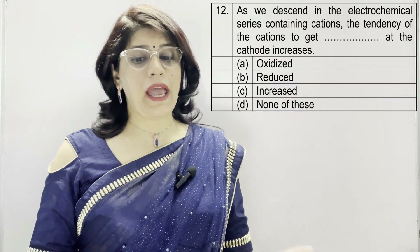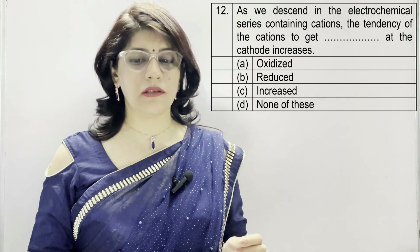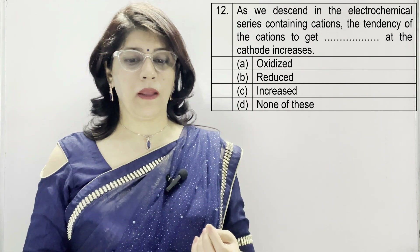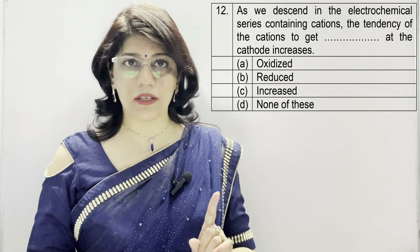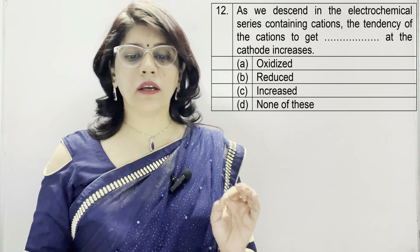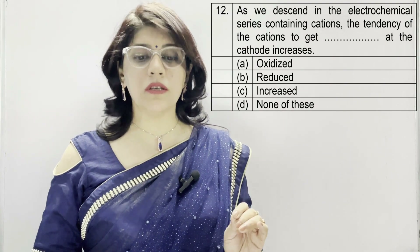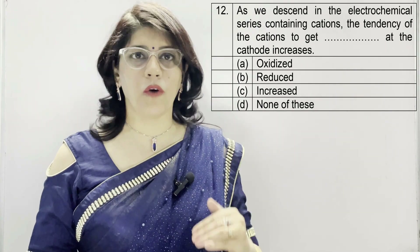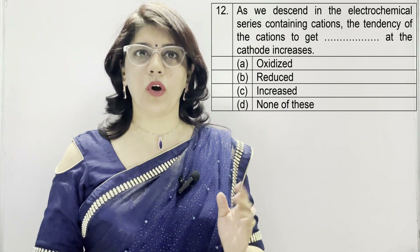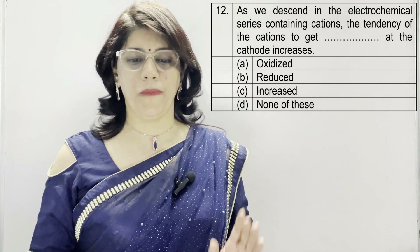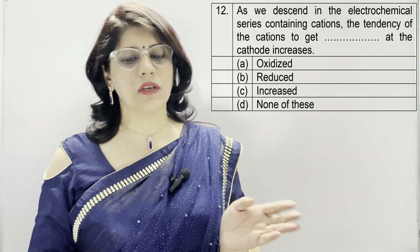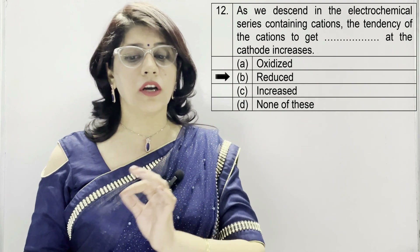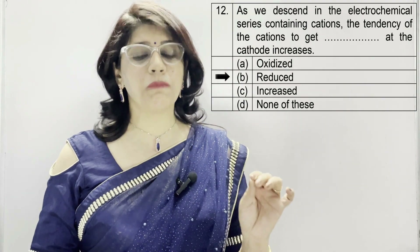In question number 12: as we descend in the electrochemical series containing cations, the tendency of the cations to get dash at the cathode increases. At the cathode, reduction takes place — always remember, at the cathode reduction always occurs, meaning gain of electrons, which happens with metals. Options: A: oxidized, B: reduced, C: increased, D: none of these. Correct option is B — reduced. Tendency of cations to get reduced at the cathode means metal is deposited.